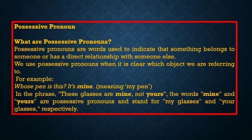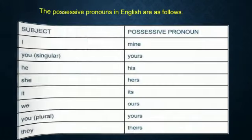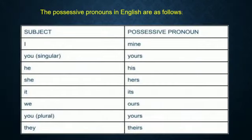In the phrase 'These glasses are mine, not yours,' 'mine' and 'yours' are possessive pronouns. They stand for 'my glasses' and 'your glasses.' The possessive pronouns in English are as follows: 'I' — 'mine'; 'you' — 'yours'; 'he' — 'his'; 'she' — 'hers'; 'it' — 'its'; 'we' — 'ours'; 'you' — 'yours'; 'they' — 'theirs.'